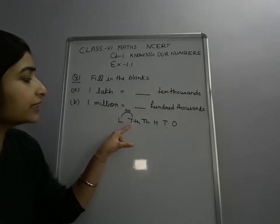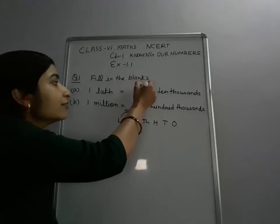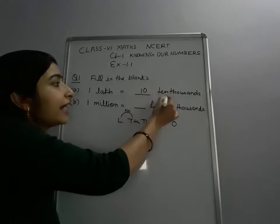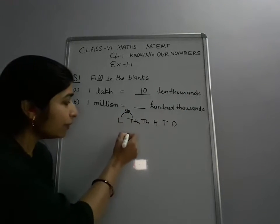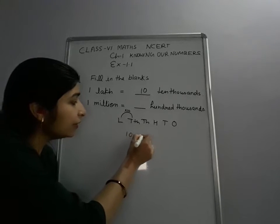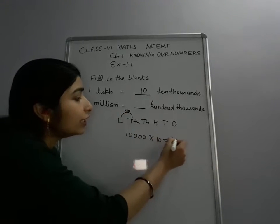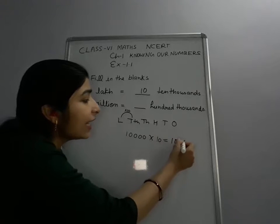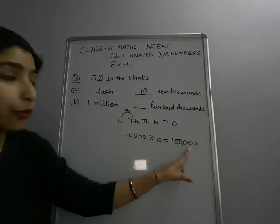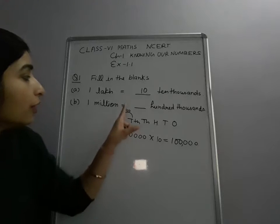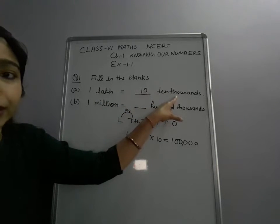Lakh is 10 times greater than 10,000. So what is the answer? 10 — that is 10,000. When you multiply 10,000 by 10, it is equal to 1 lakh — 1 followed by 5 zeros. So 1 lakh is equal to 10 × 10,000.